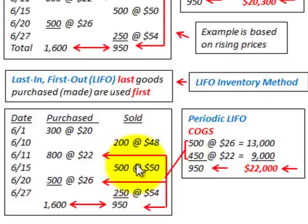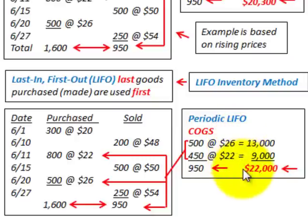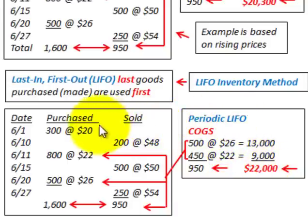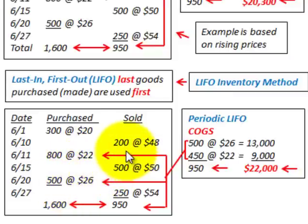For LIFO, the cost of goods sold that would have been generated comes out to $22,000. So the newest purchases are used first against any of the sales made for the period.